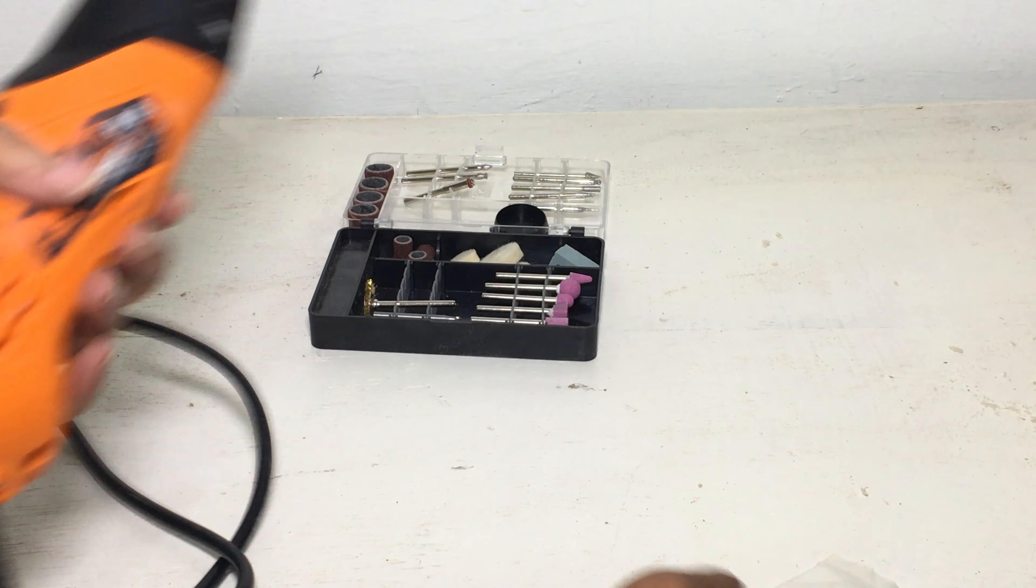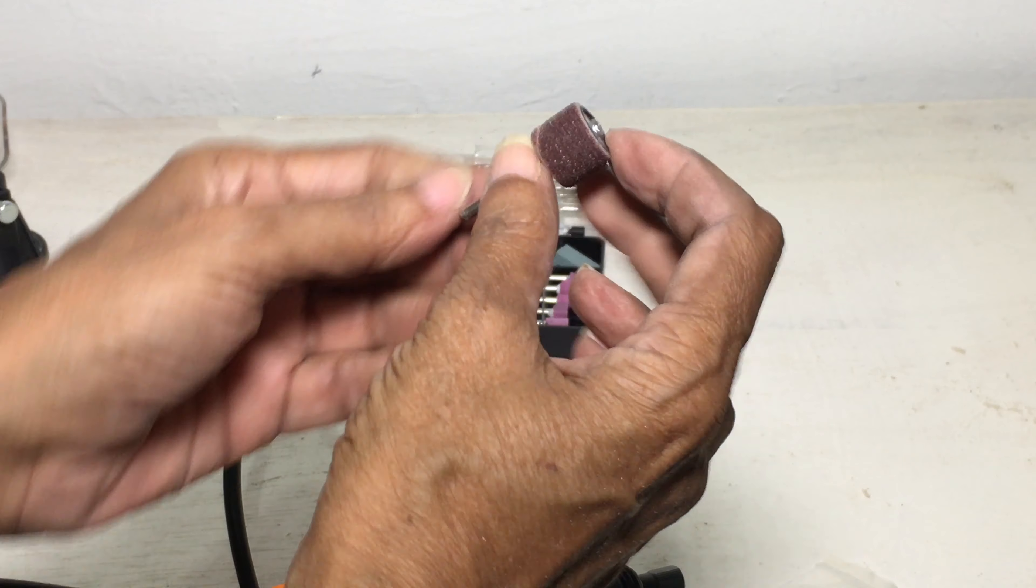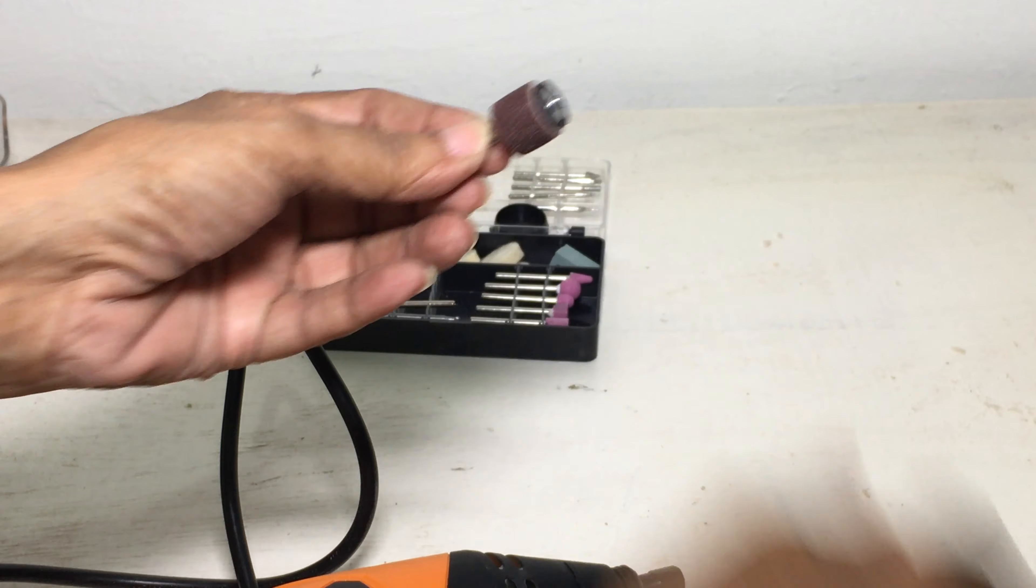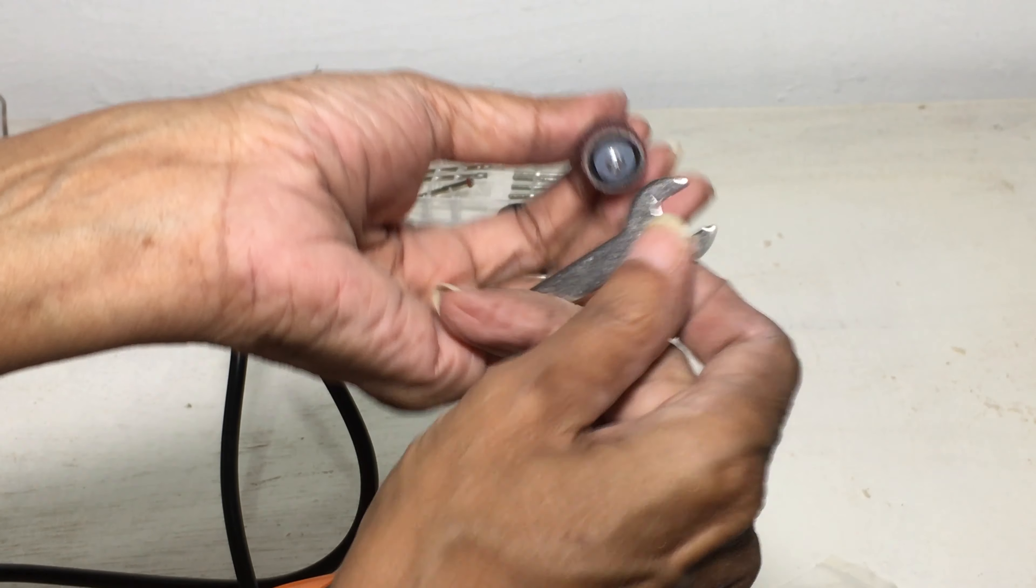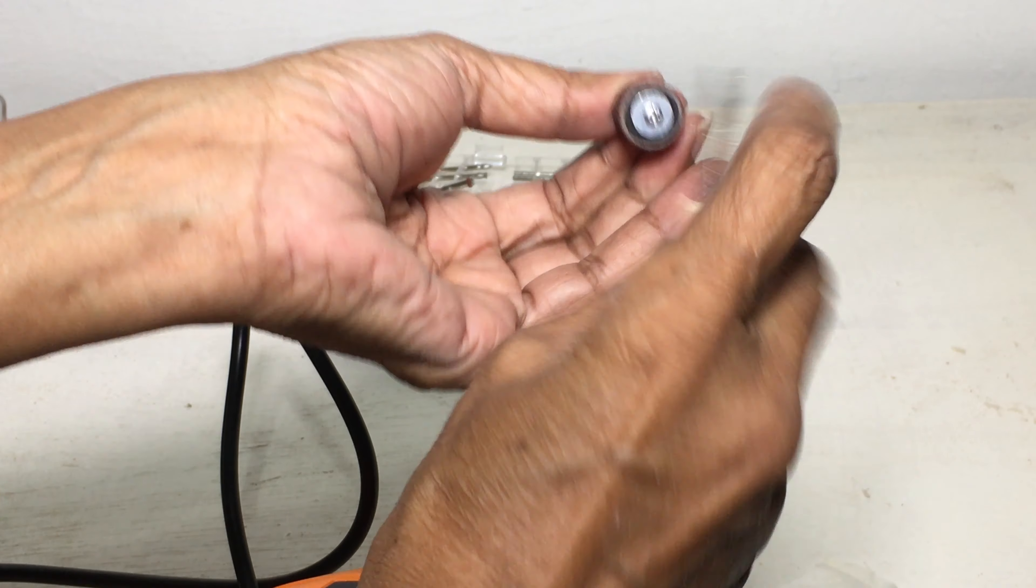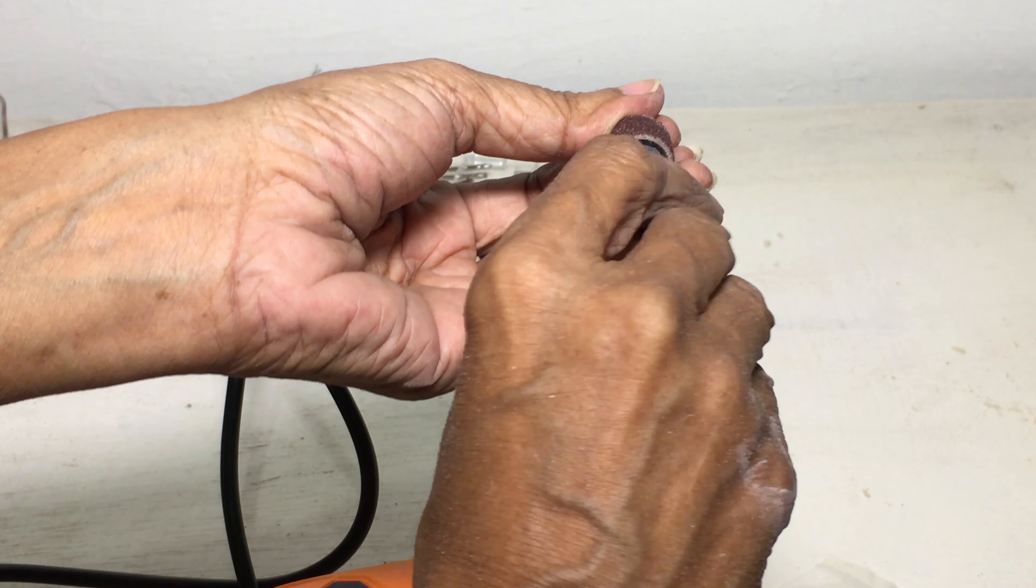To install the sanding band, slacken the screw at the top of the drum using the end of the wrench. Slip on the sanding band and fully tighten the screw to expand the width of the sanding drum to hold the sanding band securely in place.